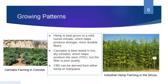Over here on the right, you'll see a hemp farm in Illinois. Illinois is very humid but doesn't get super hot, so it's a great place to grow hemp. Cannabis is best raised in hot, dry climates, which helps produce the resin or THC, but the fiber is of poor quality. Over here on the left, you'll see a cannabis farm in Colorado. Notice that while hemp grows very tall, the cannabis plants tend to be stunted — that is part of the cultivation technique.